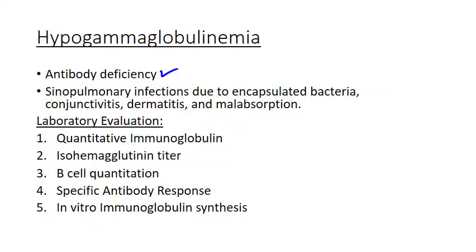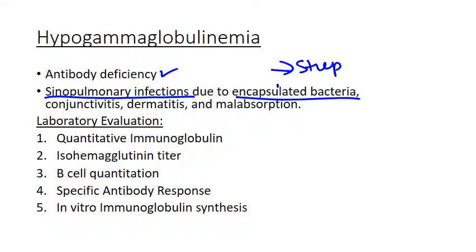Patients with hypogammaglobulinemia typically have sinopulmonary infections — i.e., sinus infections — things like sinusitis, bronchitis, pneumonia, and otitis media like ear infections. Typically these are due to encapsulated bacteria: things like Streptococcus pyogenes and Streptococcus pneumoniae, but also Haemophilus influenzae. There is a vaccine for HIB — Haemophilus influenzae type B — but there are other Haemophilus influenzae strains that can lead to these symptoms.